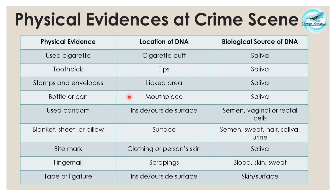A bottle or can yields mouthpiece saliva stains. A used condom — inside as well as outside surface — is very important; it contains potential biological evidence that is semen and vaginal or rectal cells. Blankets, sheets or pillows may contain semen, sweat, hair and saliva as biological sources of DNA. Bite marks yield saliva from which we extract DNA. Fingernails can provide tissues, blood, skin and sweat as sources.